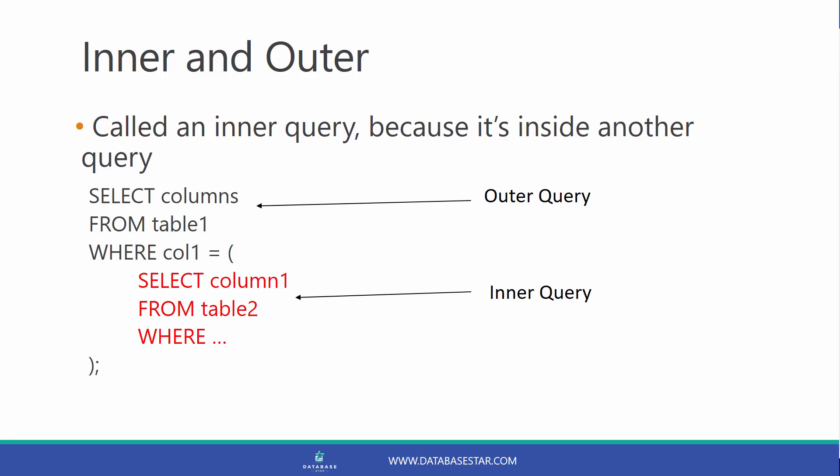Select columns from table 1, where column 1 equals, then open brackets, select column 1 from table 2, and then a where clause. Then we have our close brackets. The red or indented part here is the subquery or the inner query. The black part is the outer query or the main query.